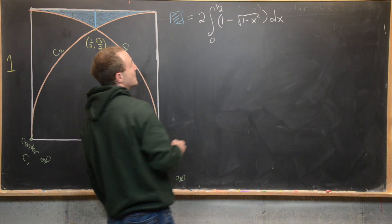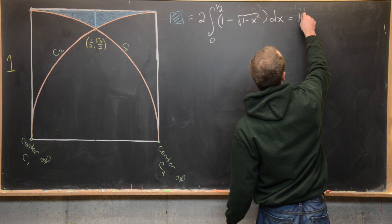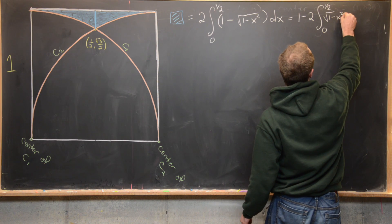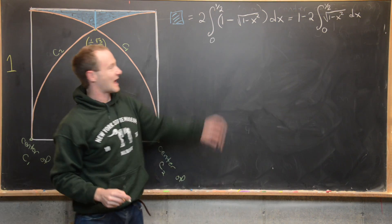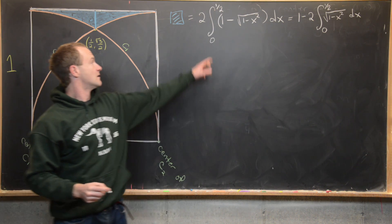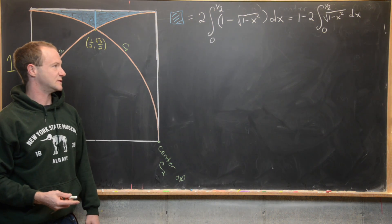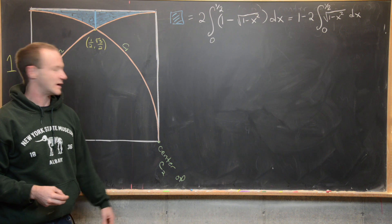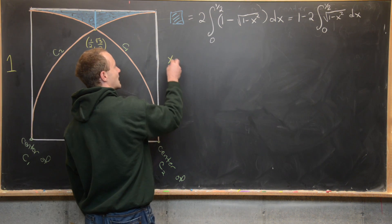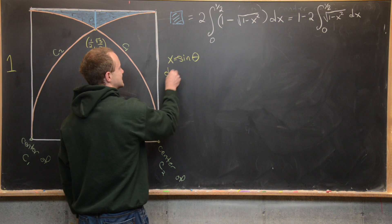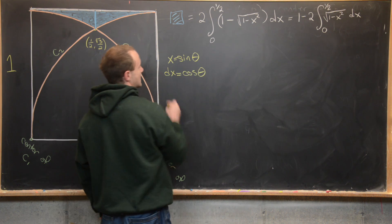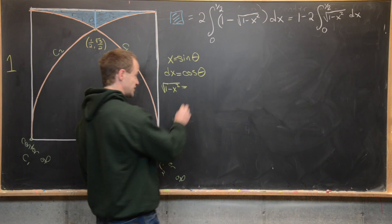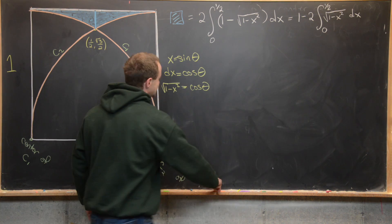That integral equals 1 minus 2 times the integral from 0 to 1/2 of √(1 − x²) dx, since the integral of 1 from 0 to 1/2 is 1/2, and multiplying by 2 gives 1. For the remaining integral we use a trigonometric substitution: let x = sin θ, so dx = cos θ dθ, and √(1 − x²) = √(1 − sin²θ) = cos θ.